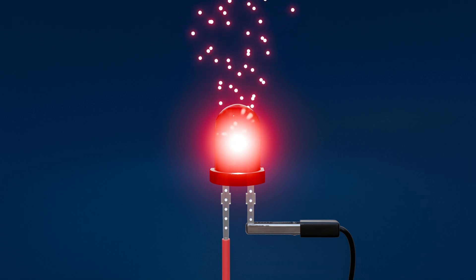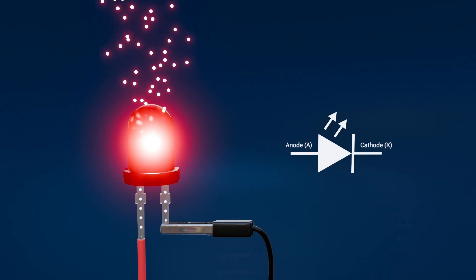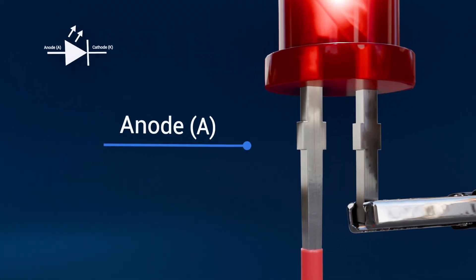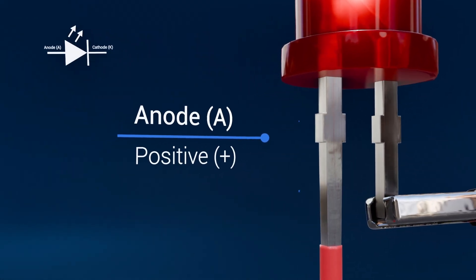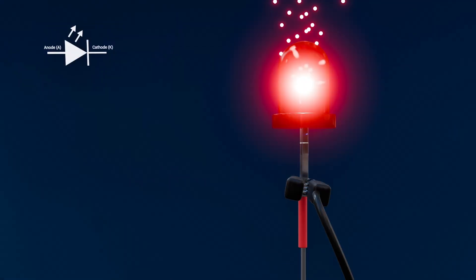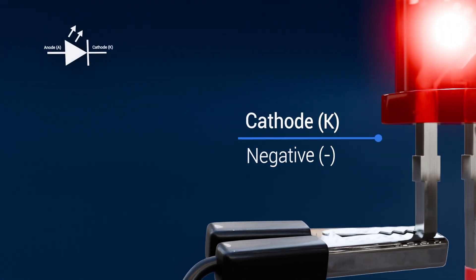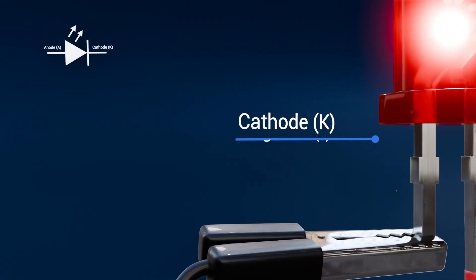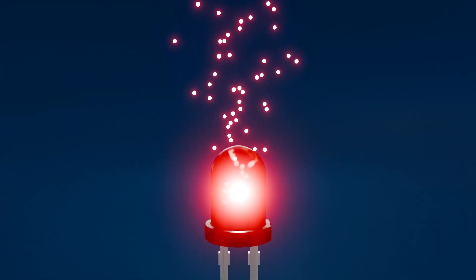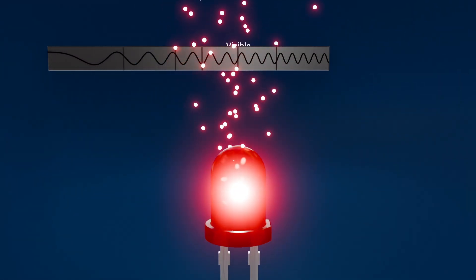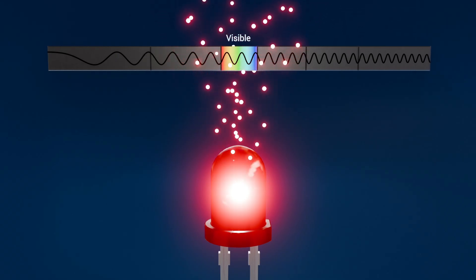As with diodes, LEDs work on the same principle, as you can see by the similar symbols. The LED symbol has two arrows indicating that light is being emitted. The anode, A, is the positive terminal where current flows in. The cathode, K, is the negative terminal where current flows out. Unlike standard diodes, LEDs emit photons. And for visible LEDs, that's typically in the 380 to 740 nanometer band.